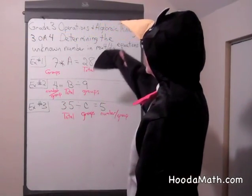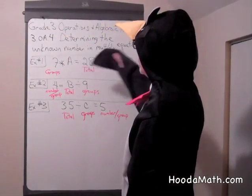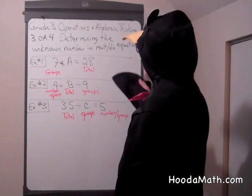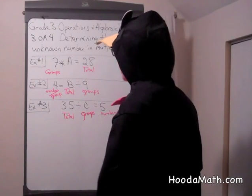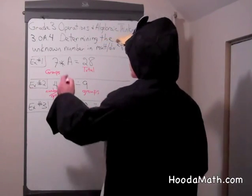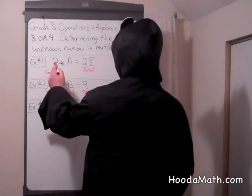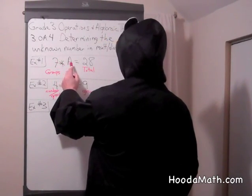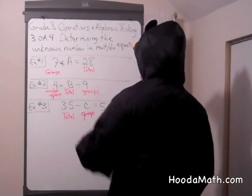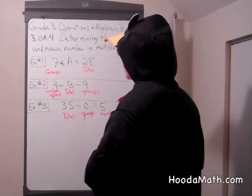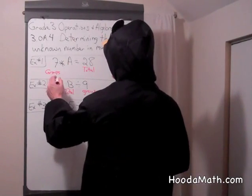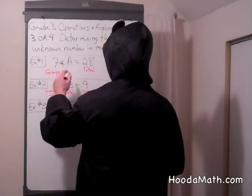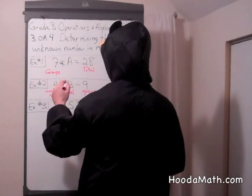We're going to learn how to determine the unknown number in multiplication and division equations. Now, when we have something like this — seven times an unknown, A, equals 28 — we know the number of groups, but we do not know how many are in each group.